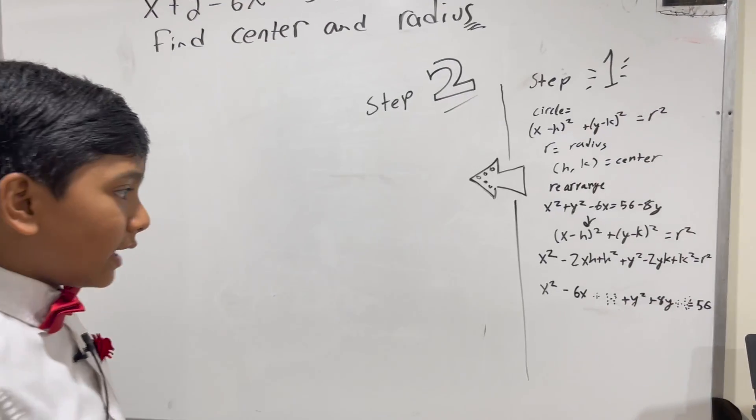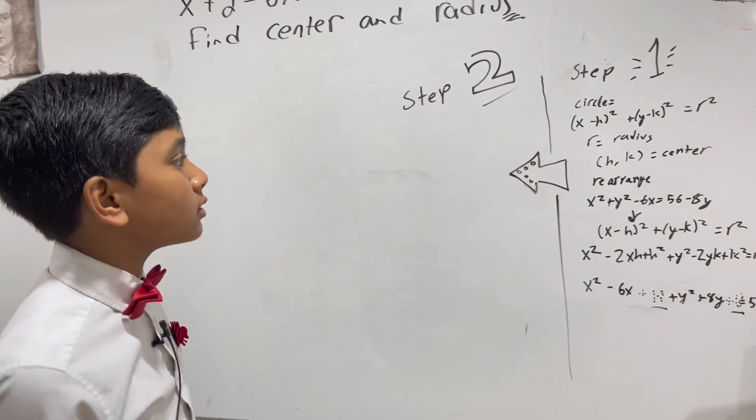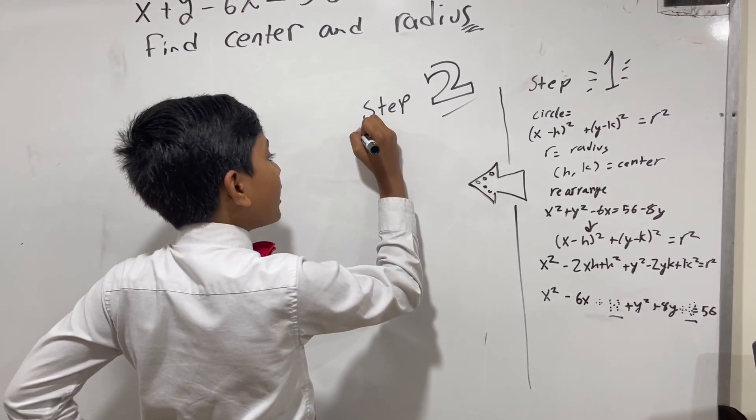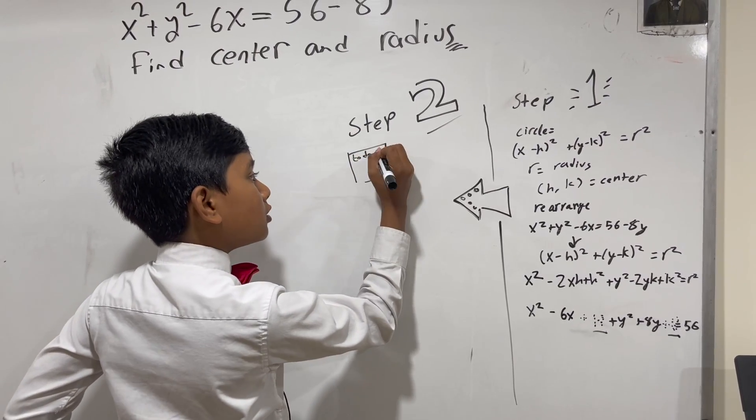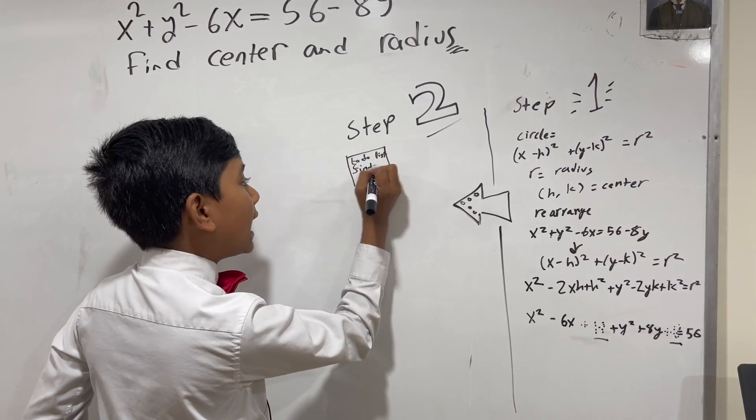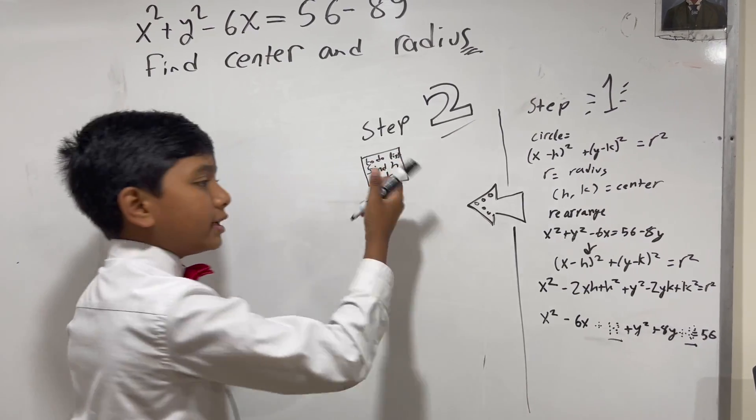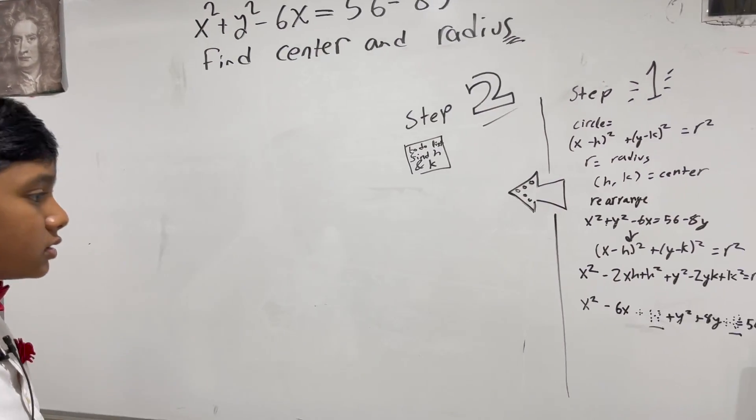what are we going to do? Well, remember, in step 1, we had this issue, that H and K squared thing. So, on our to-do list, we have to find H and K to make sure we know what the values of H squared and K squared are.